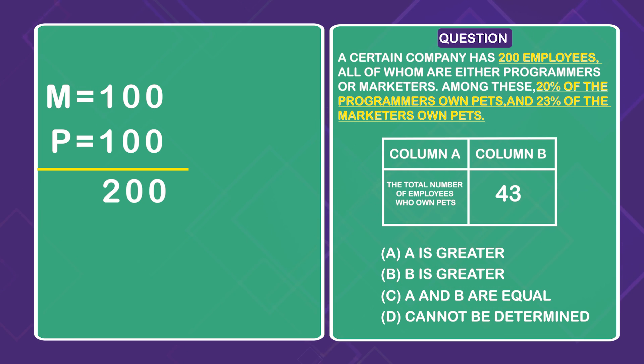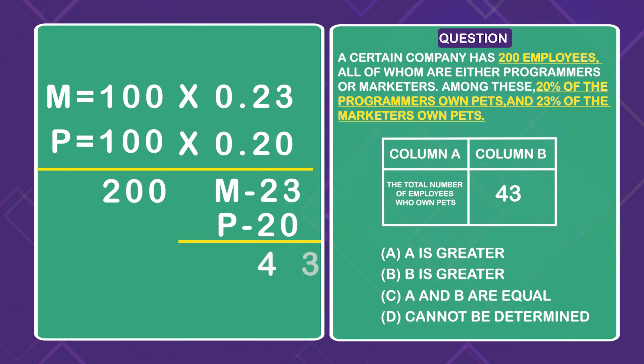Now this makes our math easy. Because we can take 23% of our marketers to determine that 23 marketers own pets. And we can take 20% of our programmers and we know that 20 programmers own pets. That means there's a total of 43 employees that own pets.